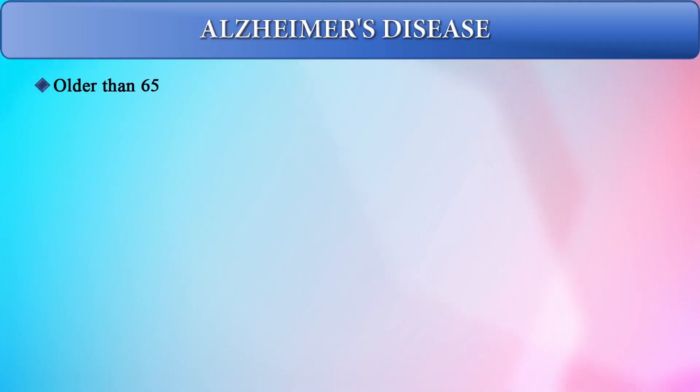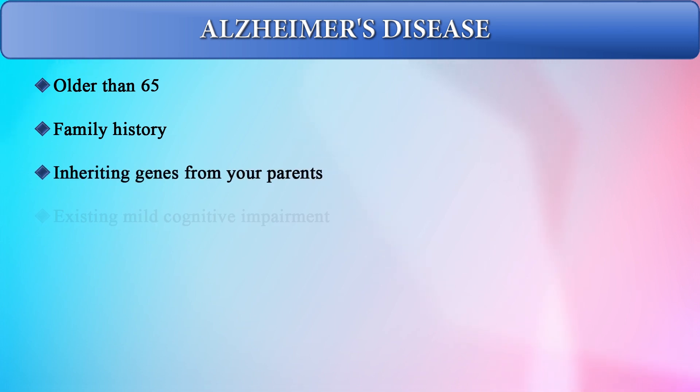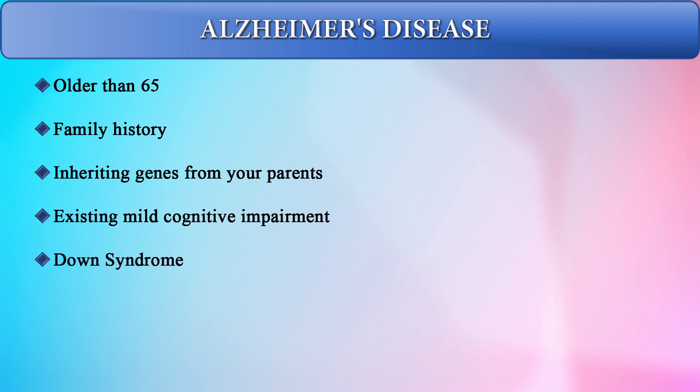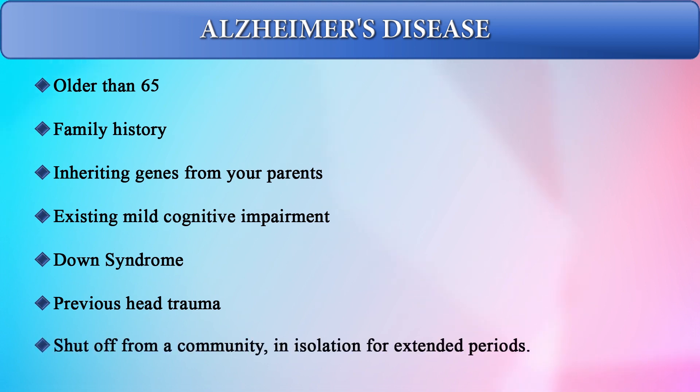Generally, Alzheimer's disease sets in at an age older than 65. Risk factors include family history and inheriting genes from parents, existing mild cognitive impairment, Down syndrome, previous head trauma or injury to the head, and social isolation. When people are cut off from a community due to pressure at work or an inability to cope with colleagues, they may become increasingly reclusive and disconnected, and can develop such mental diseases.